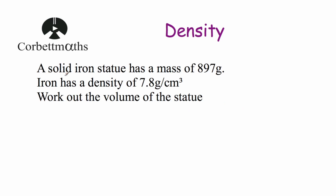Our next question says a solid iron statue has got a mass of 897 grams. Iron has a density of 7.8 grams per centimetre cubed, meaning every single centimetre cubed of iron has a mass of 7.8 grams. We need to work out the volume of the statue. So if we see how many 7.8s go into 897 grams, that would tell us how many centimetre cubes there are. So let's take 897 and divide it by 7.8 — and we get an answer of 115 centimetres cubed.